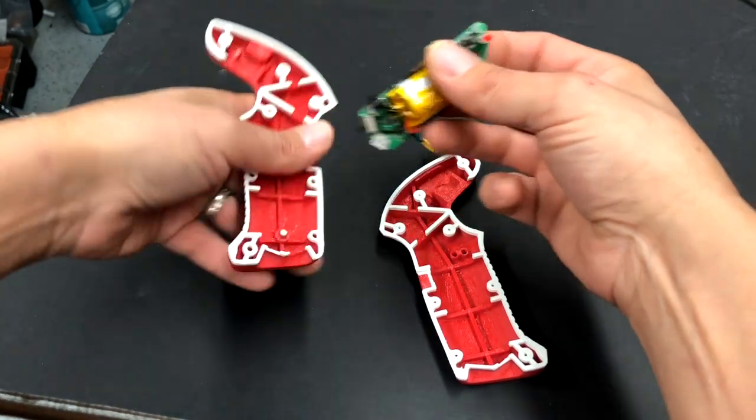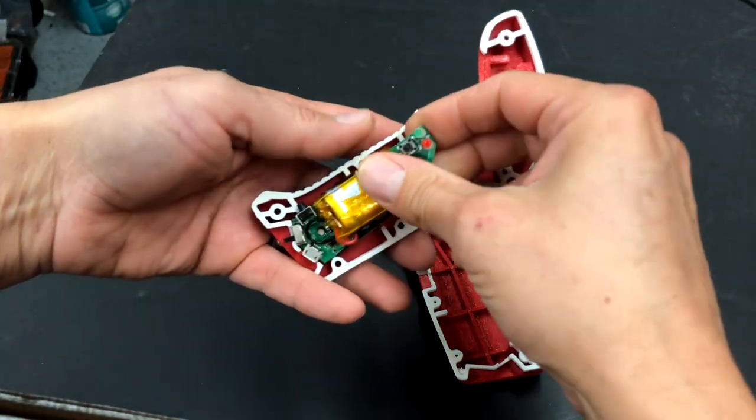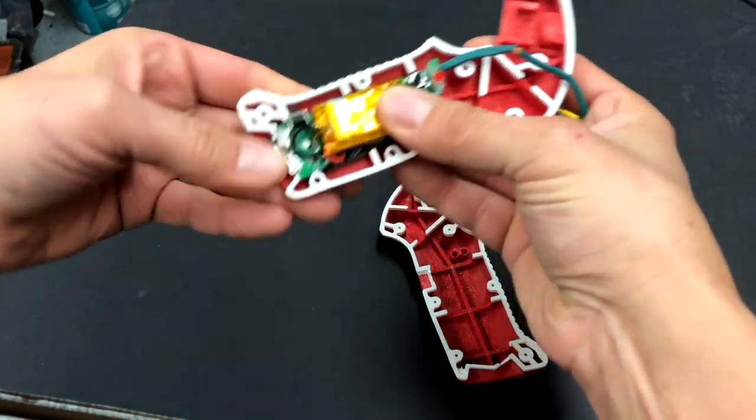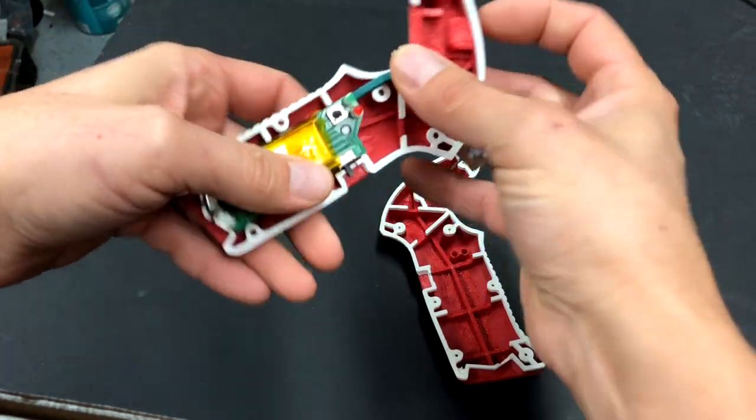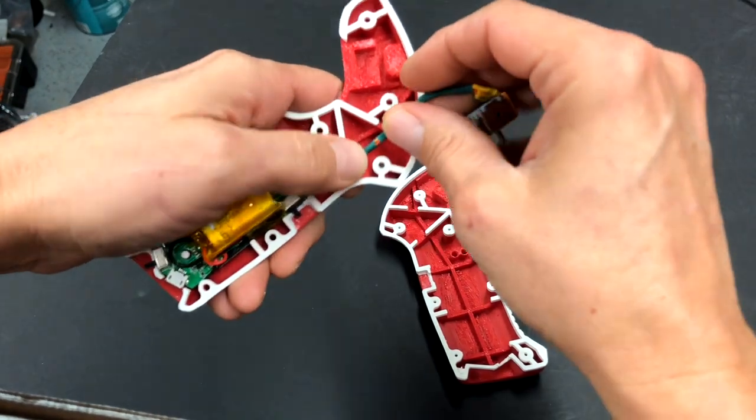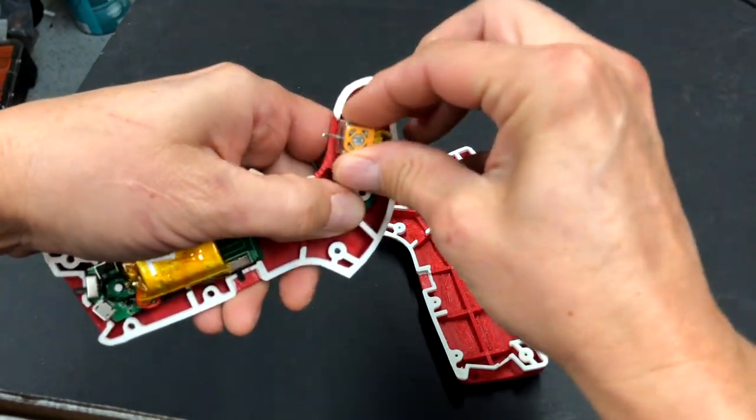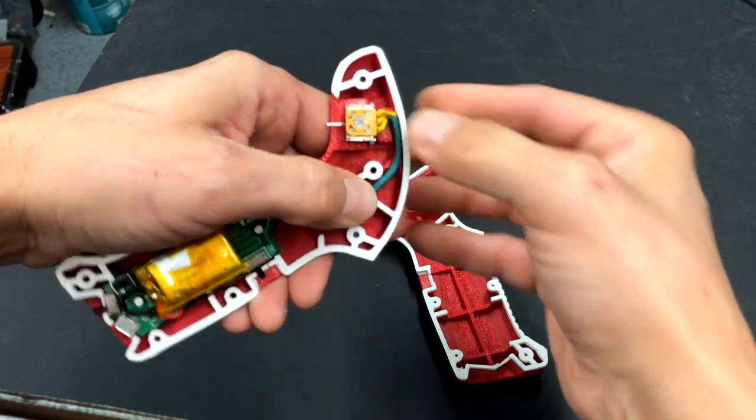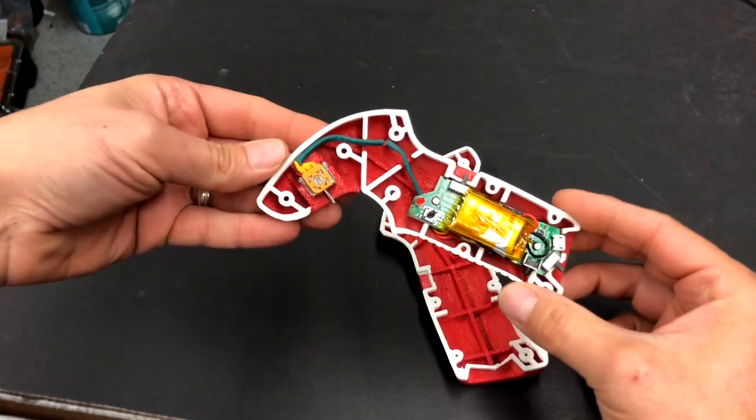Put some solder. And you simply run the wire underneath. Put the circuit board in there. Nice and flush. You route the wire up here to the top. Put in that tension meter there. And that's essentially it.